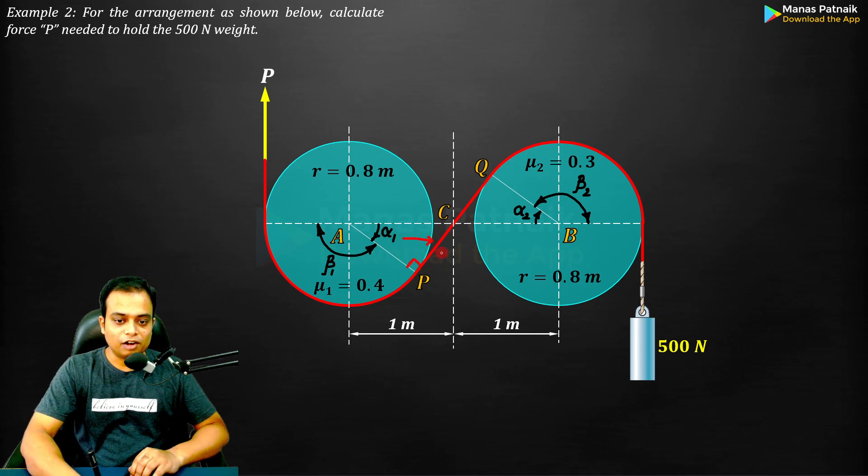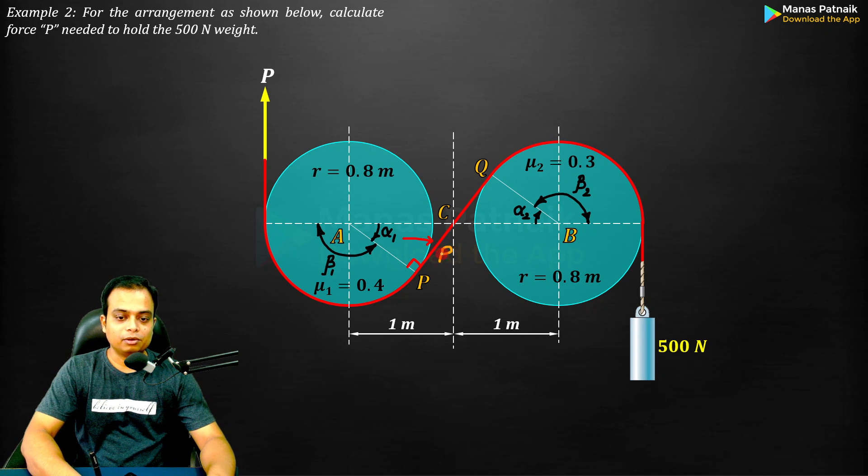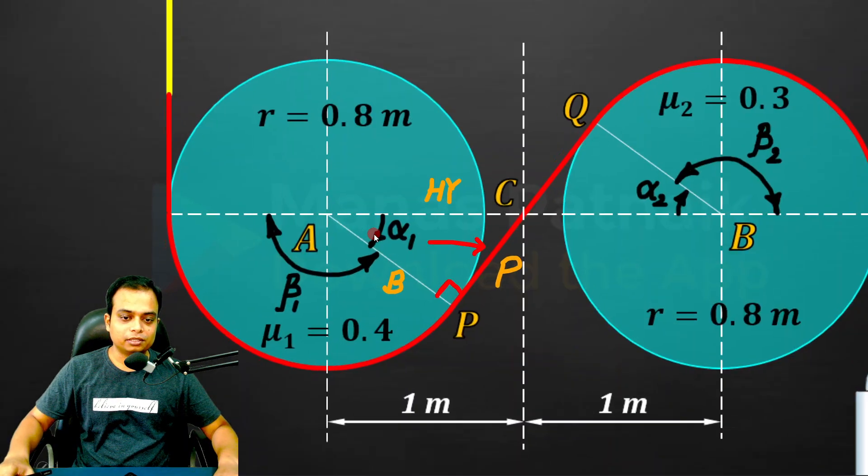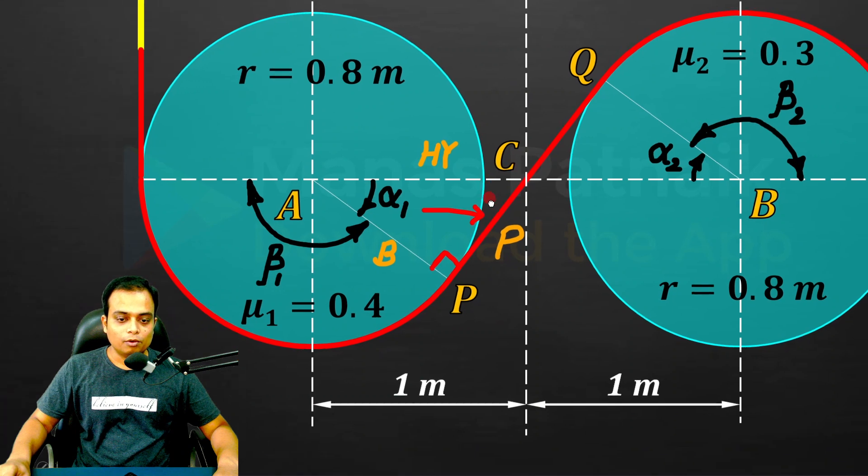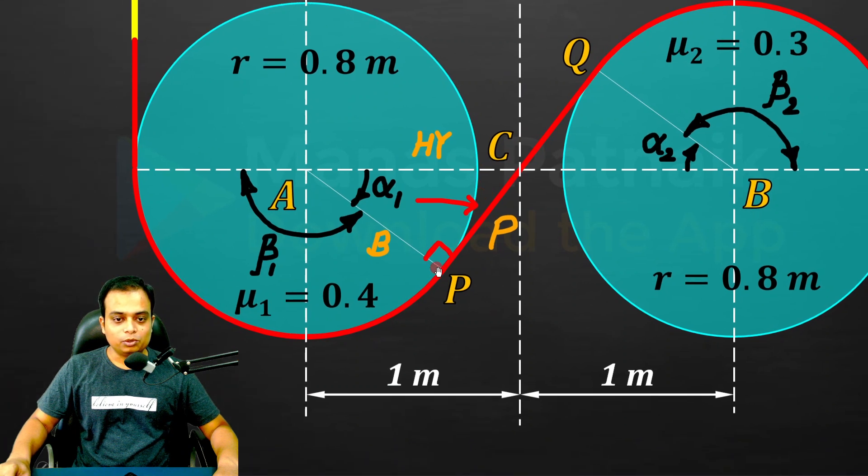The side opposite to alpha 1 will qualify as the perpendicular, this is the base, and this is the hypotenuse. To calculate alpha 1, cos alpha 1 equals base over hypotenuse. Base is the radius, hypotenuse is AC and that's one meter.